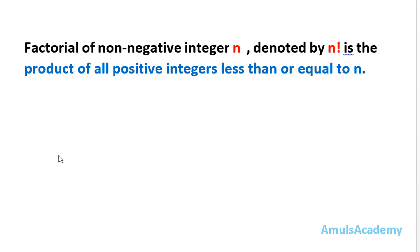First we will see the definition of factorial. The factorial of a non-negative integer n, denoted by n factorial, is the product of all positive integers less than or equal to n. In this tutorial we are talking about the factorial of positive integers — that is 1, 2, 3, 10, 15, and so on.